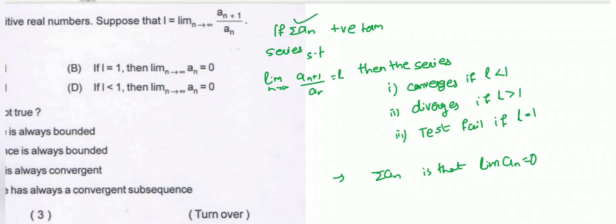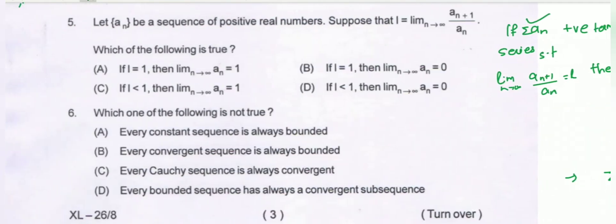We have a positive term series summation aₙ such that limit n tends to infinity of a(n+1)/aₙ equals l. Then the series converges for l less than 1, diverges for l greater than 1, and test fails for l equal to 1.